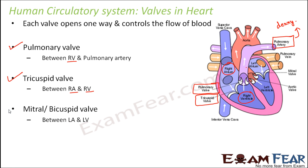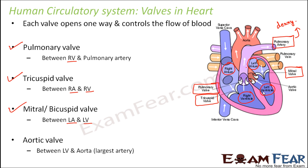The third valve is the mitral valve, also called the bicuspid valve. It is present between the left auricle and the left ventricle. When this valve opens, it allows blood to flow from the left auricle to the left ventricle.